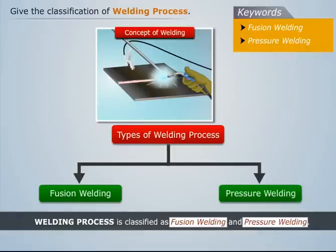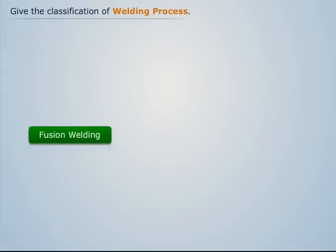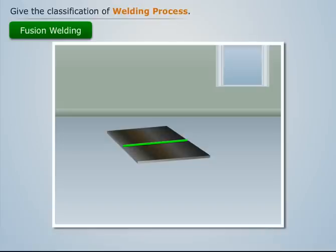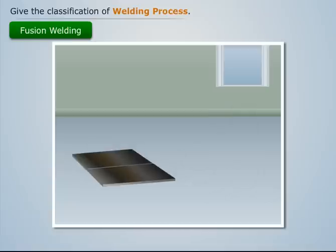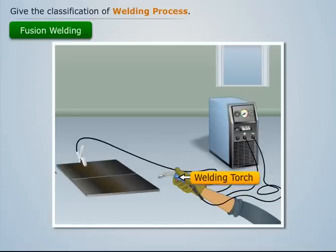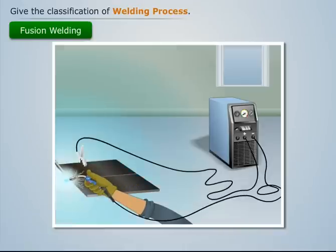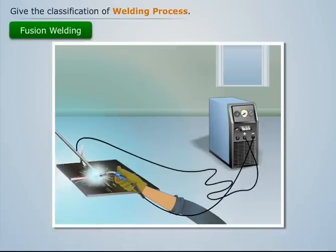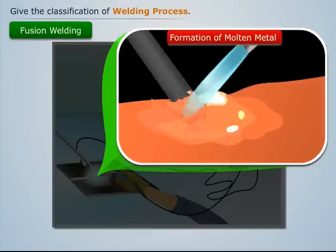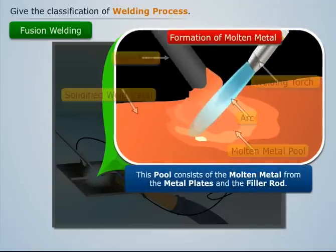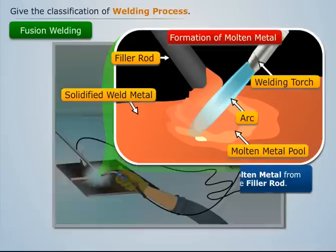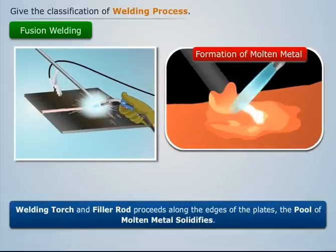Let's first understand what fusion welding is. To join two metal plates along the edges, place the welding torch and filler rod above the edges of the plates and start the welding process. Due to heat from the welding torch, a large pool of molten metal is formed. This pool consists of molten metal from the metal plates and the filler rod.